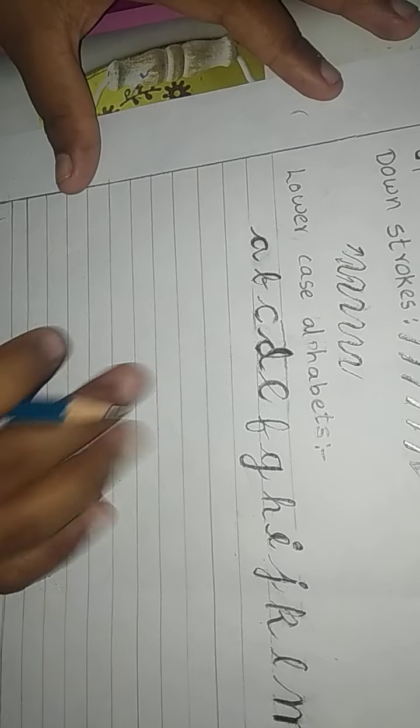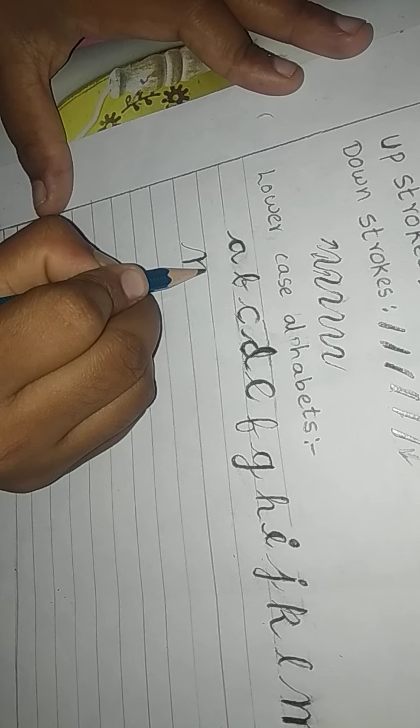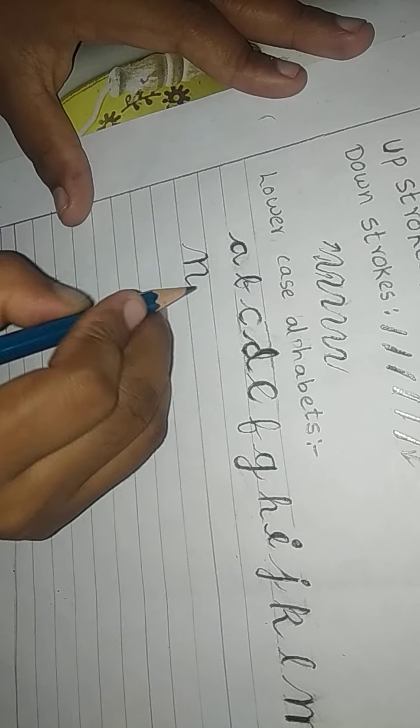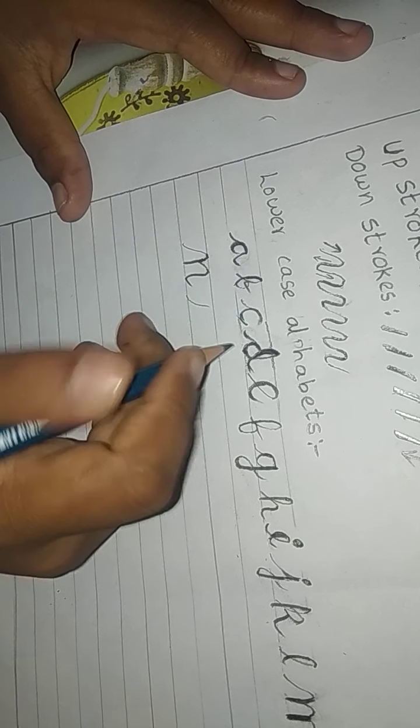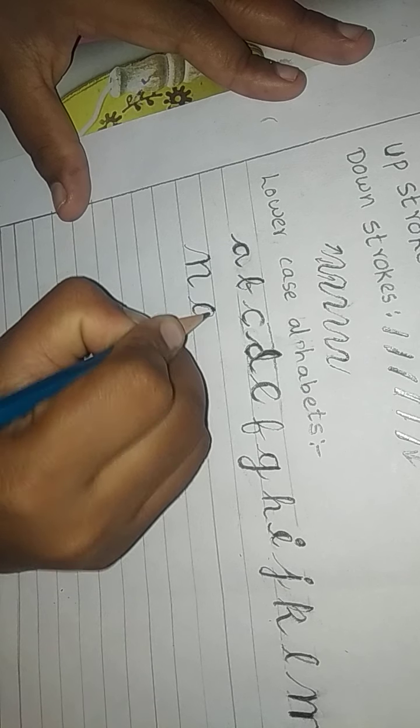Then write M: first up stroke, very thin line, then down stroke, thick line, then up stroke, thin line, then down stroke, thick line, then up stroke very thin line and down stroke very thick line. Draw M like this. Then N: first thin line, then thick line, then thin line, then thick line. Write N like this.